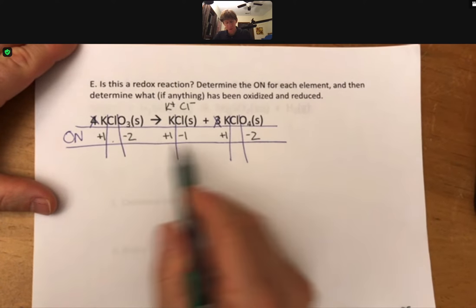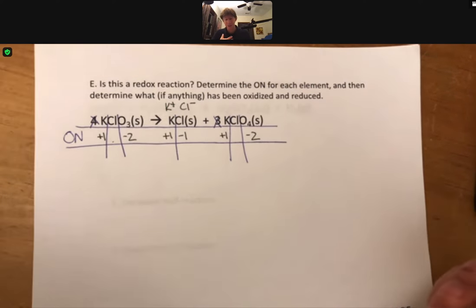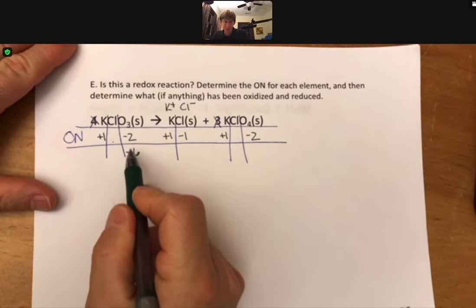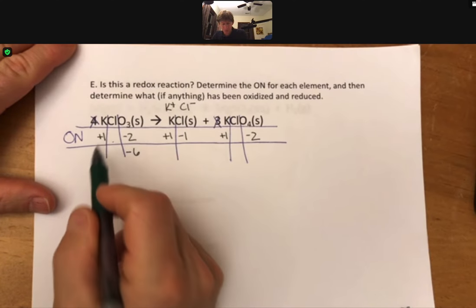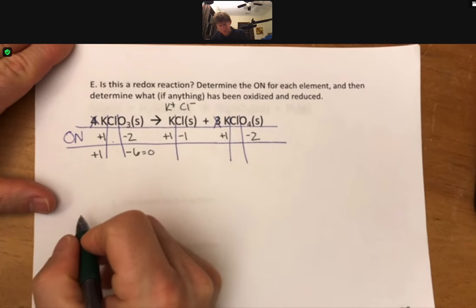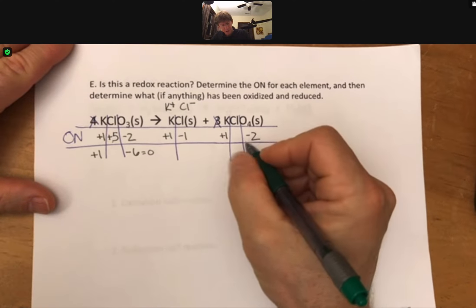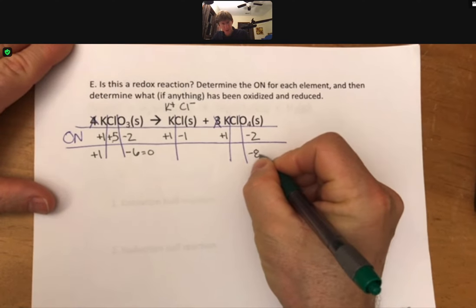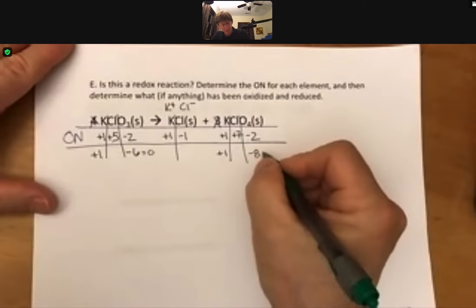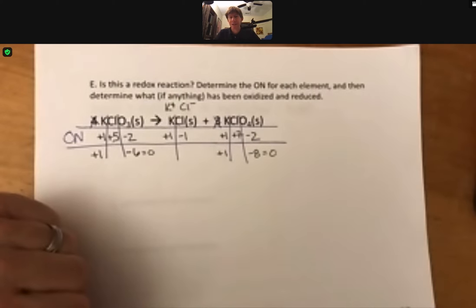That just leaves us with our two chlorines that we don't know. Let's go through our process. There are three oxygens each at minus two, that's minus six. There's just one potassium ion. The charge on this is zero. That means this one must be plus five. Coming over here, we have four oxygens for minus eight, plus one.